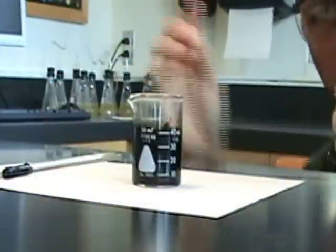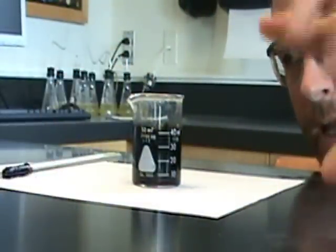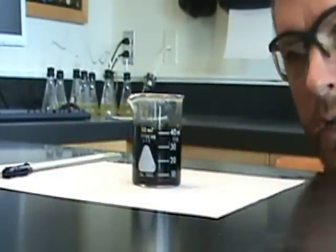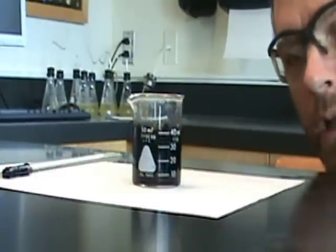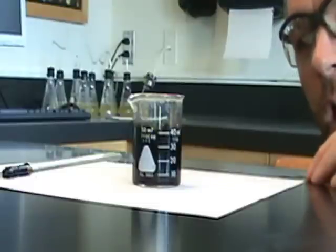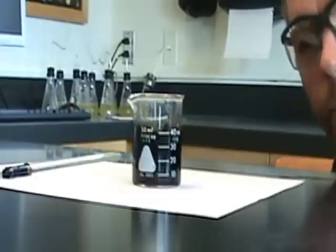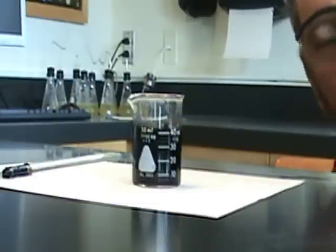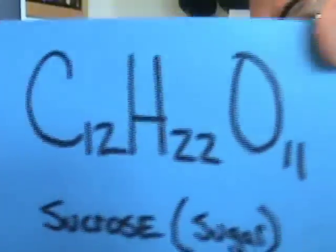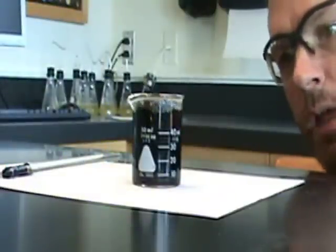Just keep watching. You can see an immediate change already — we had white crystals and a clear liquid, and now we have kind of a black, goopy liquid. What's going to happen is as this reaction gets going more and more, water is actually being removed from the sugar. Remember, you had C12H22O11.